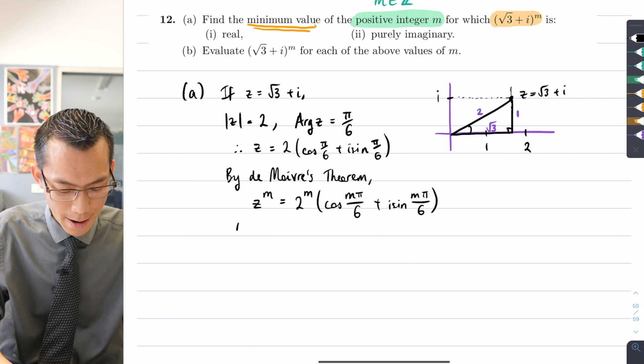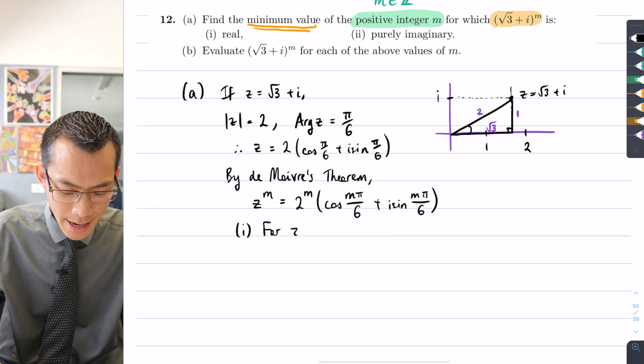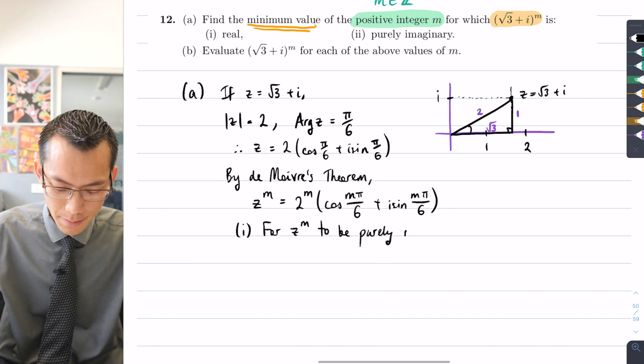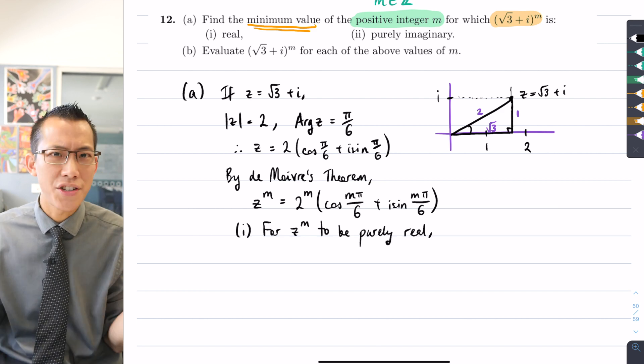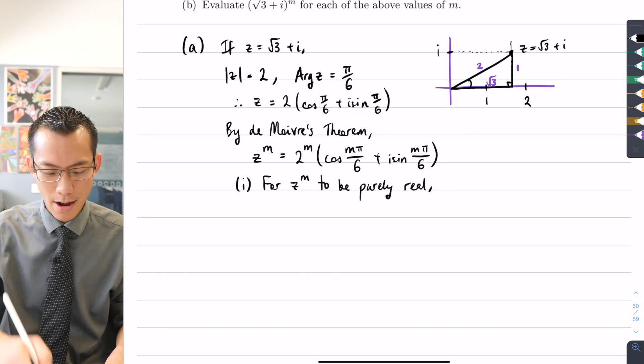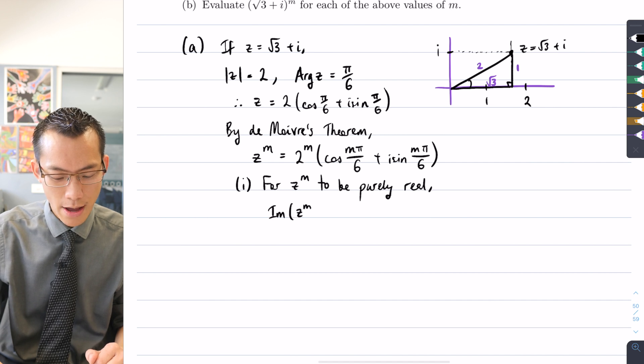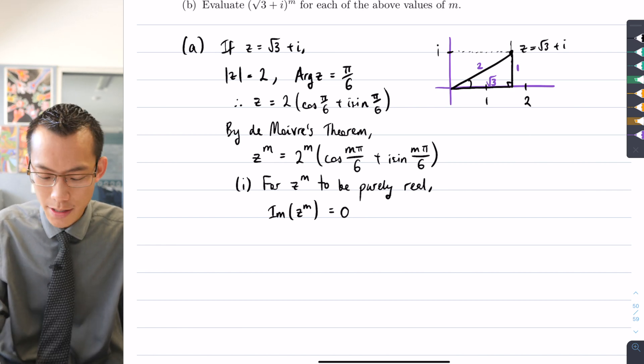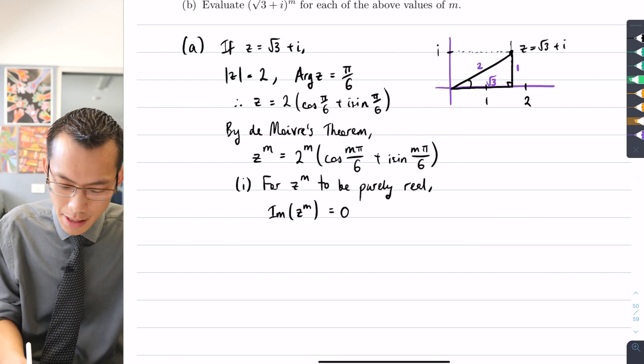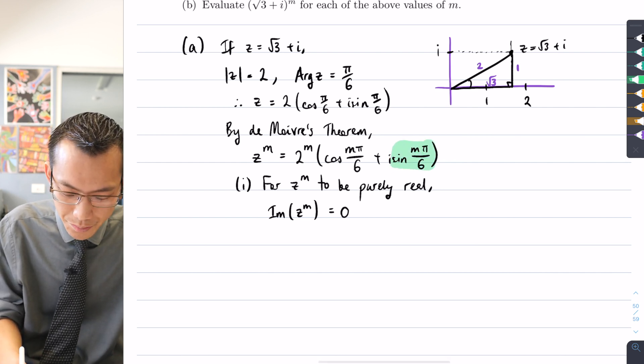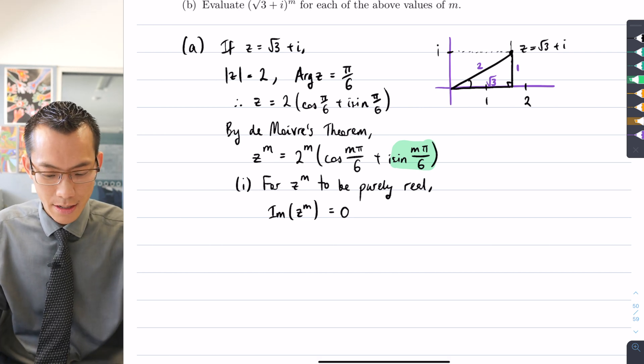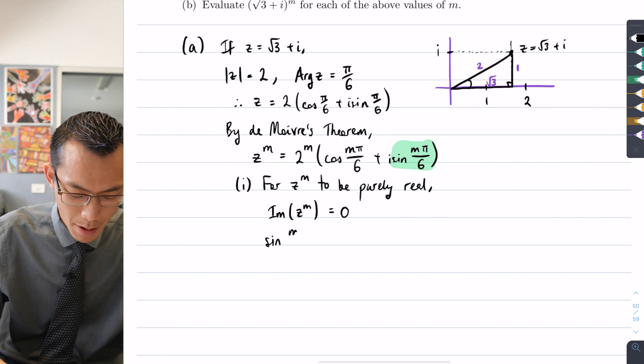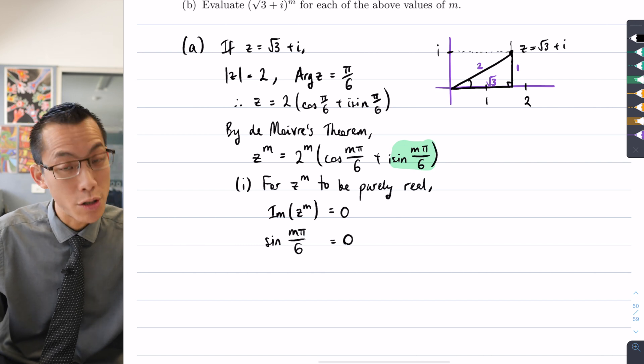Let's think about this one at a time. Part one: for z^m to be purely real, I want there to be no imaginary component. In other words, I want the imaginary part of z^m to be zero. I actually know what the imaginary part of z^m is because of how I wrote it up here. This part here is the imaginary part, so I can substitute that in: sin(mπ/6) = 0.